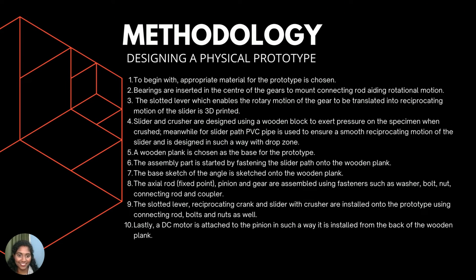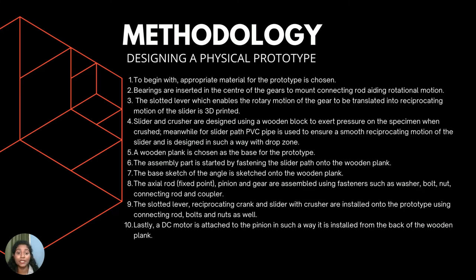Now let's look at the manufacturing segment. We first chose the appropriate material for the prototype, reusing old 3D-printed gears found in the lab to reduce material waste. We then inserted bearings in the center of the gears to mount the connecting rod, allowing rotational motion of the gear. We continued with 3D printing of the slotted lever, which enables the rotary motion of the gear to be translated into the reciprocating motion of the slider. We then focused on production of the slider, crusher, and slider path. Slider and crusher were designed using a wooden block to exert maximum pressure on the specimen when being crushed.